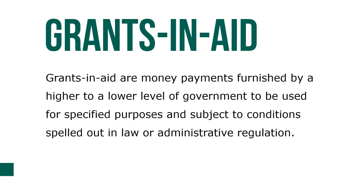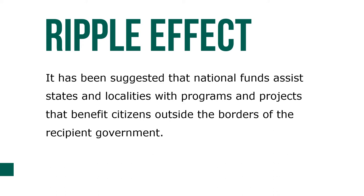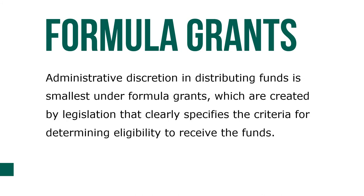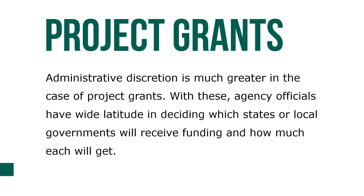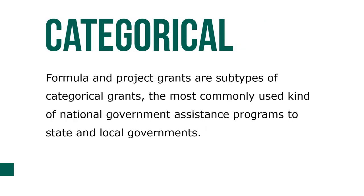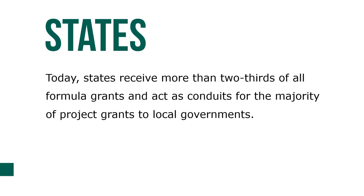Grants and aid are money payments furnished by a higher to a lower level of government, to be used for specified purposes and subject to conditions spelled out in law or administrative regulation. National funds assist states and localities with programs that benefit citizens outside the recipient government's borders. Administrative discretion in distributing funds is smallest under formula grants, which are created by legislation and clearly specify eligibility criteria. Discretion is much greater in the case of project grants. Both are subtypes of categorical grants, the most common form of national government assistance to state and local governments.